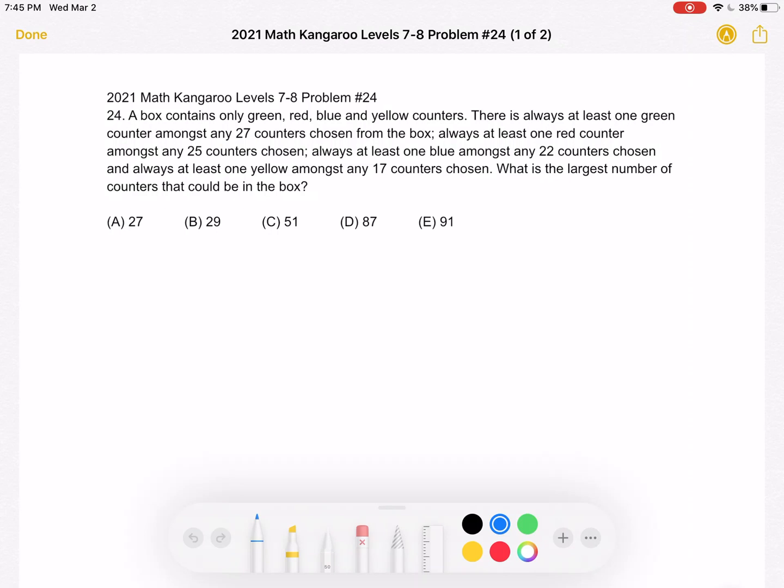There is always at least one green counter among any 27 counters chosen from the box, always at least one red counter among any 25 counters chosen, and always at least one blue among any 22 counters chosen, and always one yellow among any 17 counters chosen. What is the largest number of counters that could be in the box?